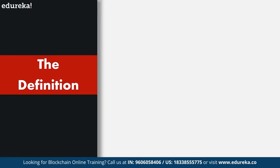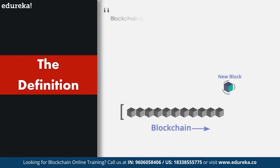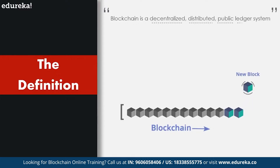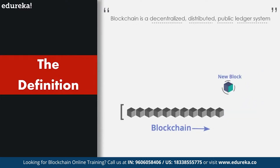Let's start with the simple definition of blockchain technology. Blockchain is a decentralized, distributed, public ledger system. Now let's break down the definition and understand each and every technical term.